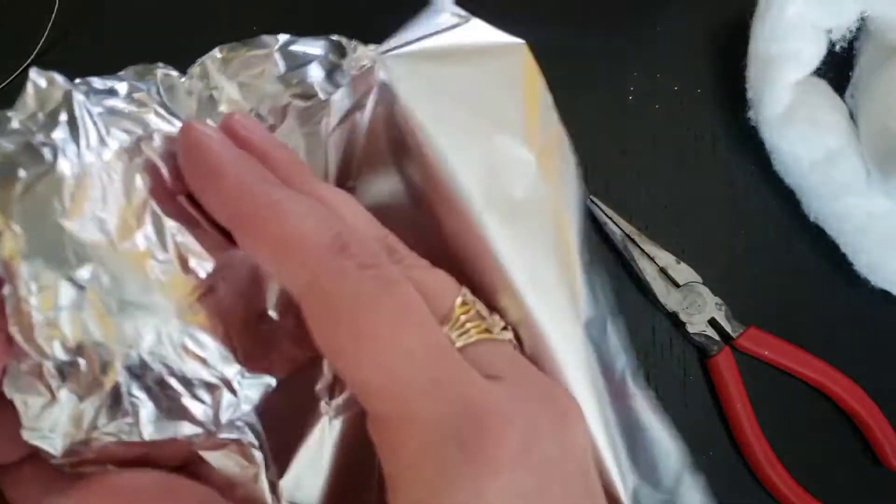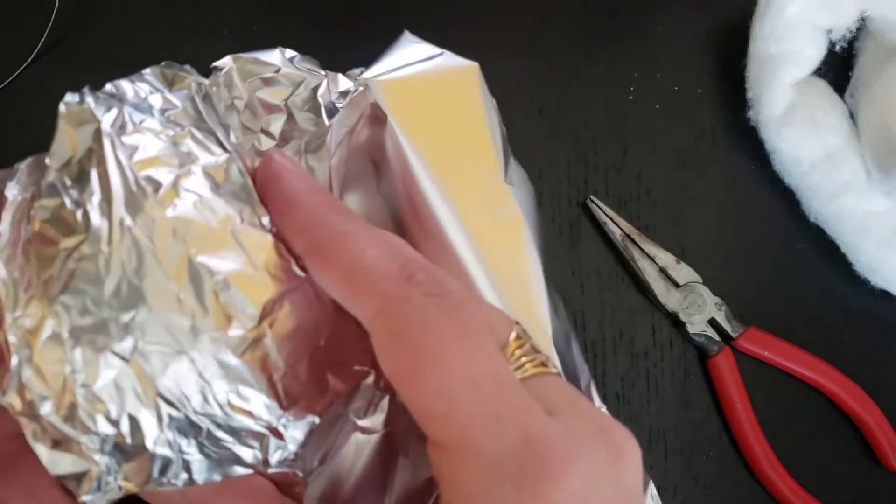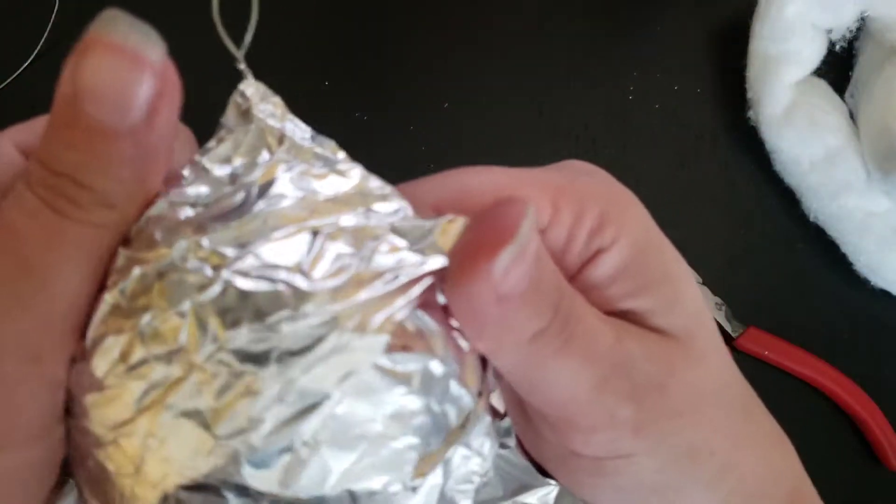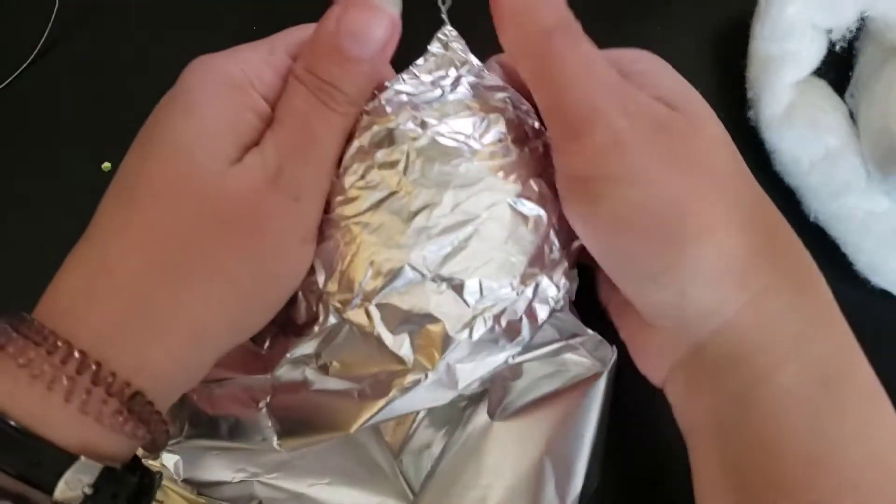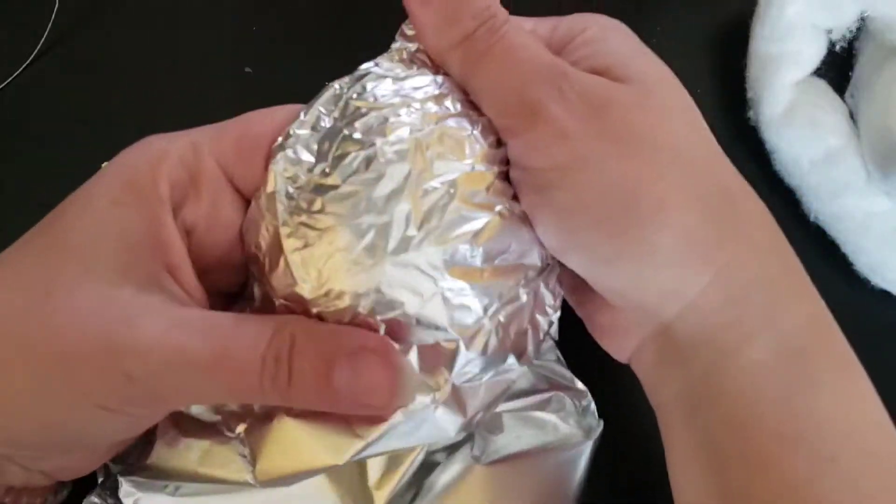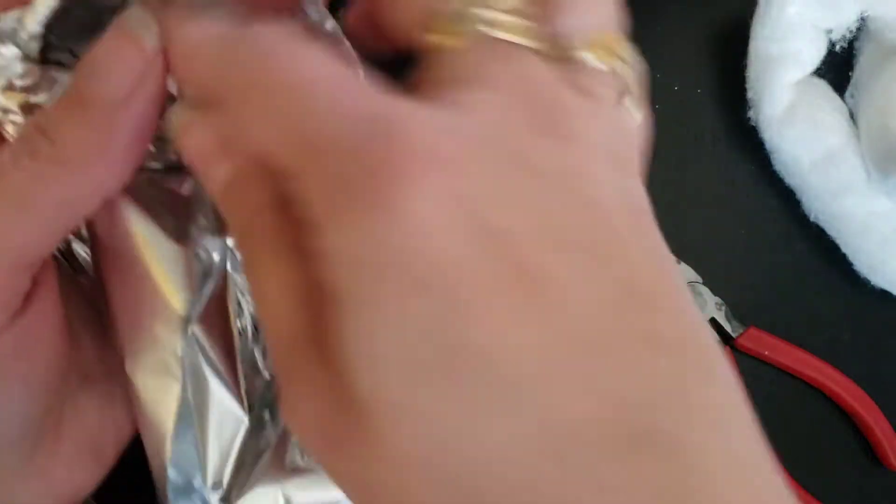Now we want to make, this is going to be the back, so we want to make it not too big, but you still want it to have some substance since it's going to be a cat. You want it to have some back to it, but the main decoration is going to be on the front.